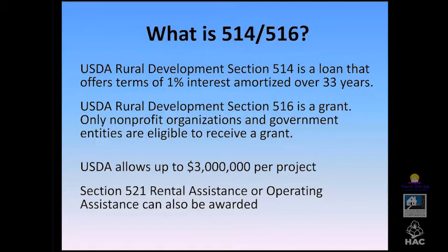Eligible uses of 514-516 funds include buying, building, improving, or repairing farm labor housing; purchasing land and installing site improvements such as water and sewer systems, roads, and lighting. Funding can be used to furnish refrigerators, stoves, dishwashers, and window coverings, and in the case of migrant farm workers, furniture such as beds and dressers. Funding can also provide community facilities including community meeting rooms, cafeterias, childcare facilities, recreational facilities for children, and maintenance and storage facilities.